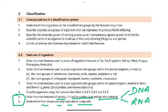Viruses can only replicate in living cells, so they need a living host cell, which can be an animal cell, a plant cell, or a bacterium. They actually invade animal cells, plant cells, and bacteria. The virus which invades bacteria is called a bacteriophage, and you will study phages a lot in genetic engineering as well.